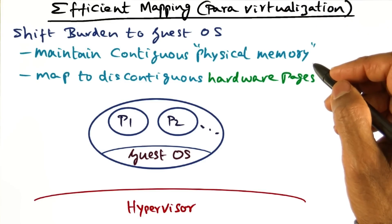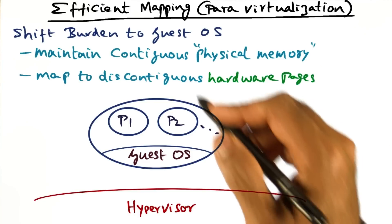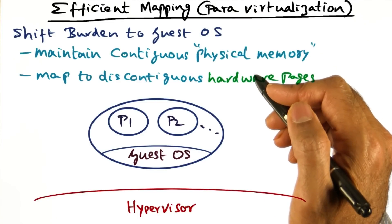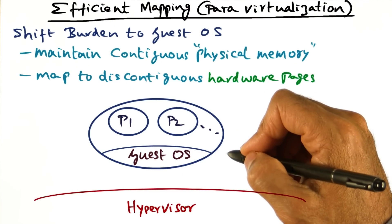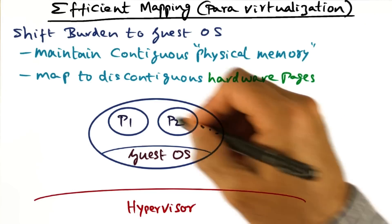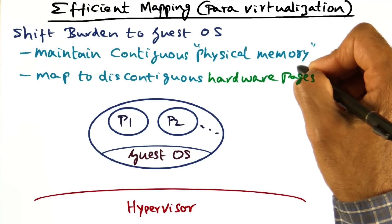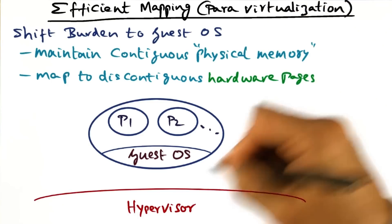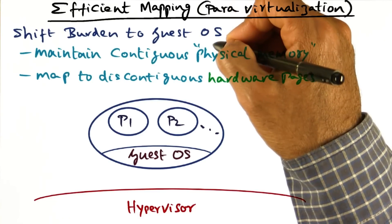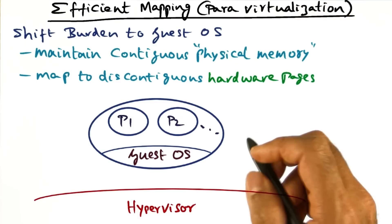In a para-virtualized setting, the operating system knows that its physical memory is not contiguous. Therefore, the burden of efficient mapping can be shifted into the guest operating system itself. The guest operating system is going to maintain contiguous physical memory, making it simpler for other subsystems. But it also knows its notion of physical memory is not the same as machine memory, so it will map the discontinuous physical memory to real hardware pages. That burden of doing the PPN to MPN mapping can be pushed into the guest operating system in a para-virtualized setting.